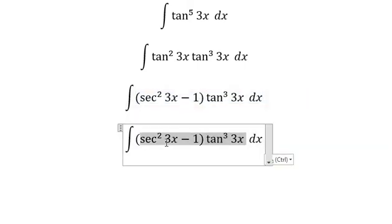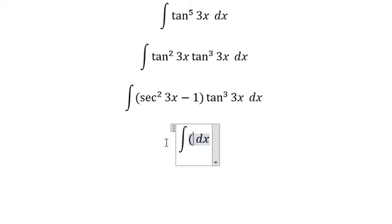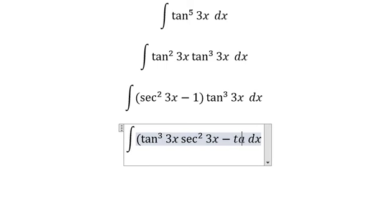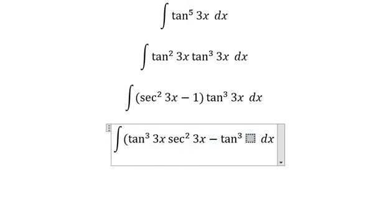And you will get tan³(3x) multiplied by sec²(3x) minus tan³(3x).